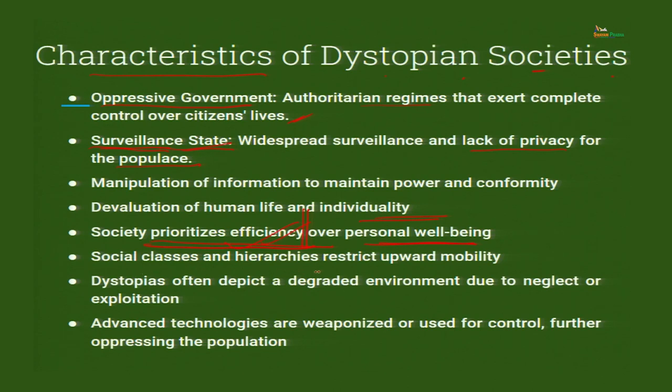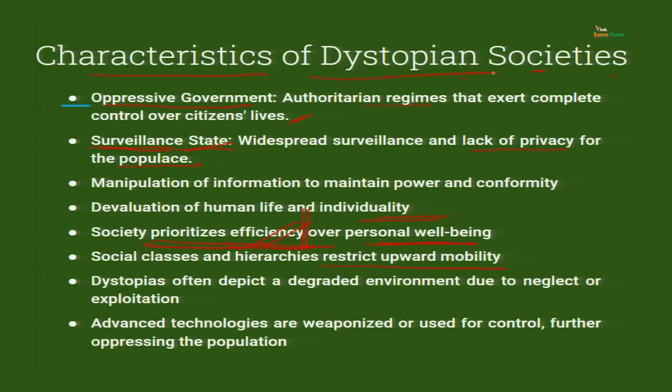Social classes and hierarchies restrict upward mobility. In our country, people from lower classes are given reservations, privileges, monetary support, and social support through multiple government schemes. But suppose there is a society that does none of those things — whoever is backward will remain backward forever and whoever has the upper hand will always prosper. That kind of society is again a dystopian society.